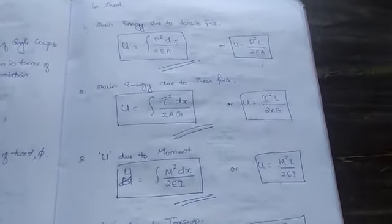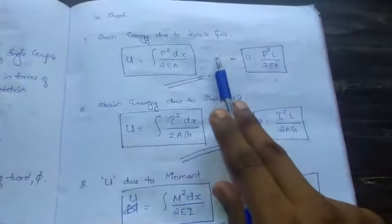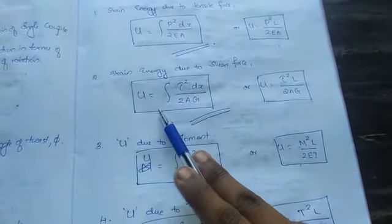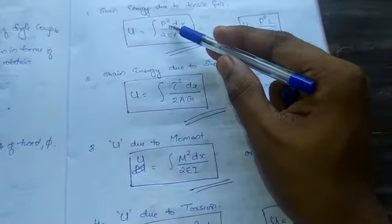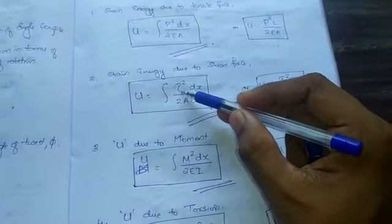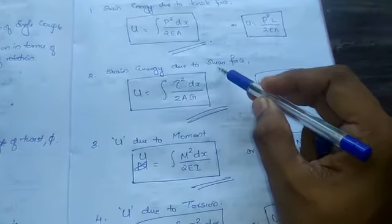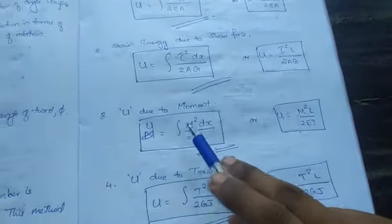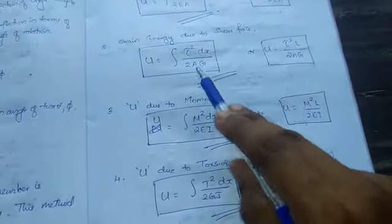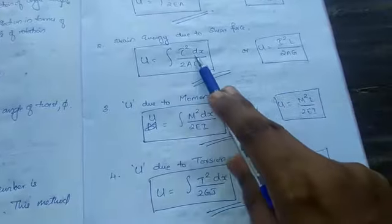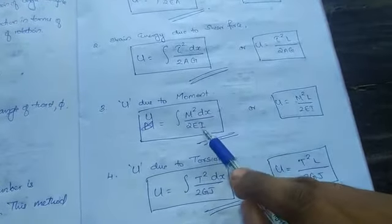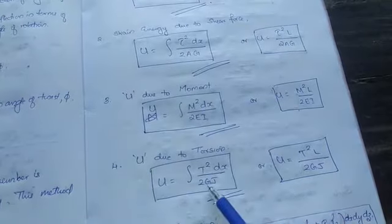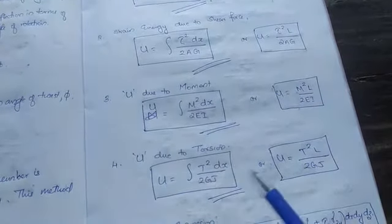Let us summarize the equations. Due to tensile force or axial force, U is integral P square dx by 2EA. For shear force, instead of P it's shear, and instead of E it's G. Due to moment, it's M square dx by 2EI. Instead of tau it's M, and instead of G it's I. Similarly, instead of M it's T, and instead of E it's G, and instead of I it's polar moment of inertia.